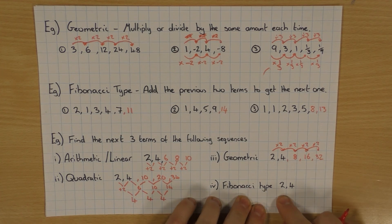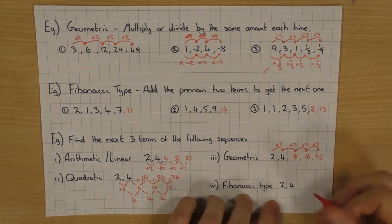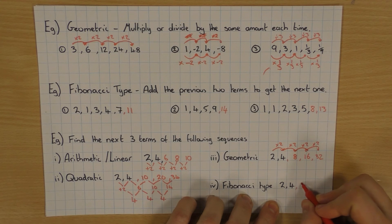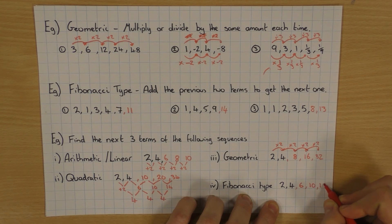And finally the Fibonacci type sequence. It's when I'm adding the previous 2 to get the next one. So I'll add these 2 together to get 6. Then 4 add 6 is 10. And then finally 6 add 10 is 16. Okay.